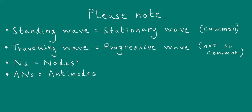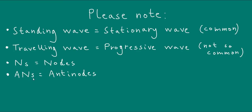Also in this video, to save a bit of space, when I want to write nodes I'll abbreviate this as a capital N, small s. And similarly, instead of anti-nodes, I'll write capital A and small s. So let's compare and contrast these waves.